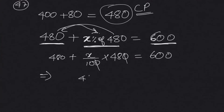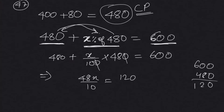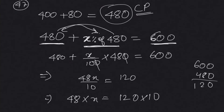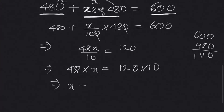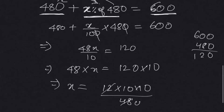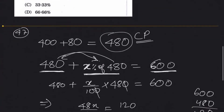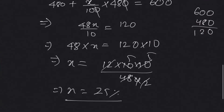Solving: 48X divided by 10 equals 120. So X equals 120 multiplied by 10 divided by 48, which gives X equals 25 percent. So the answer is option B — 25 percent profit.